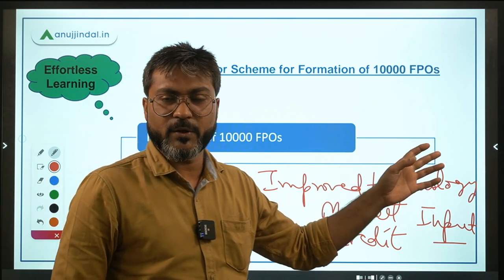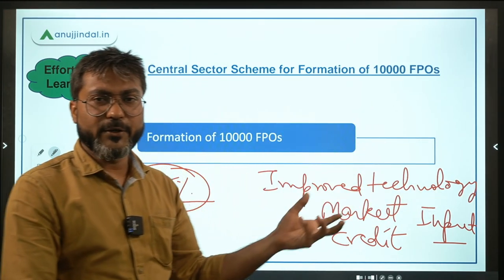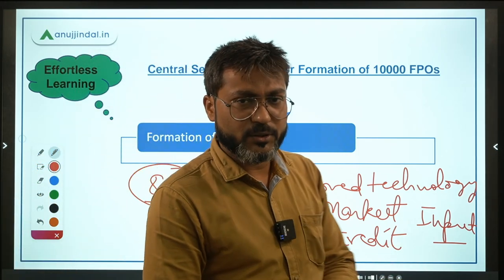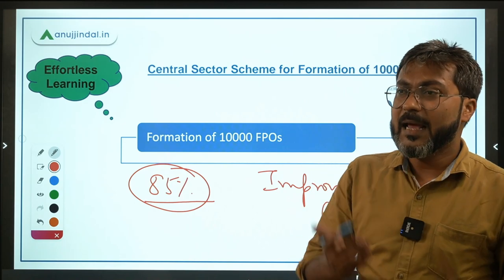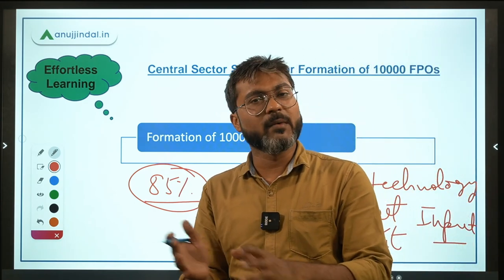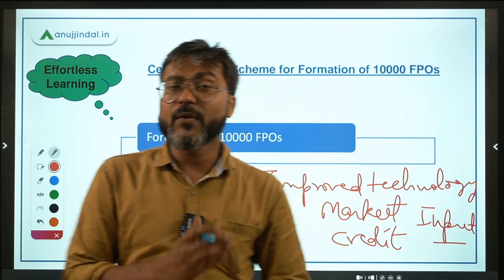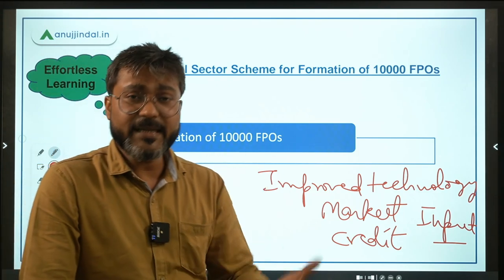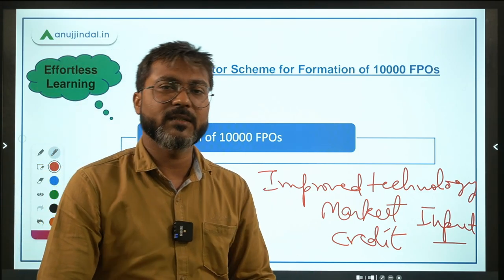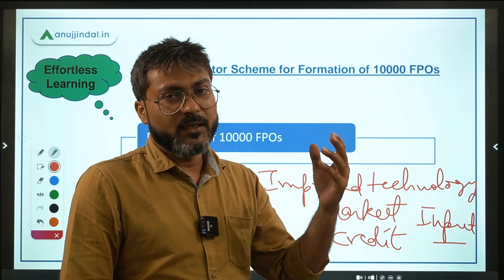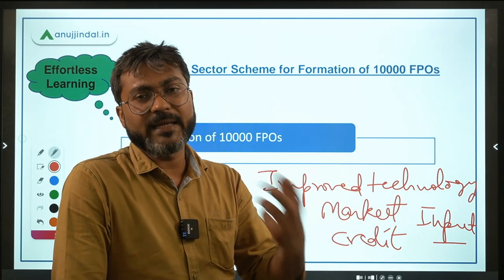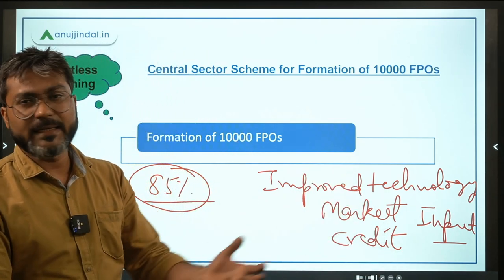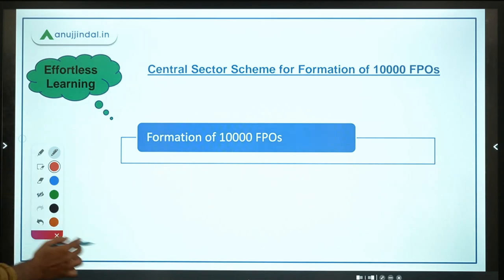So to summarize: 10,000 FPOs will be formed. A Producer Organization is a legal entity whose members are primary producers like farmers and fishermen. If members are only farmers, it is a Farmer Producer Organization. The need arises because the highest percentage of small and marginal farmers in the country lack access to improved technology, inputs, credit, etc. required for efficient agriculture.